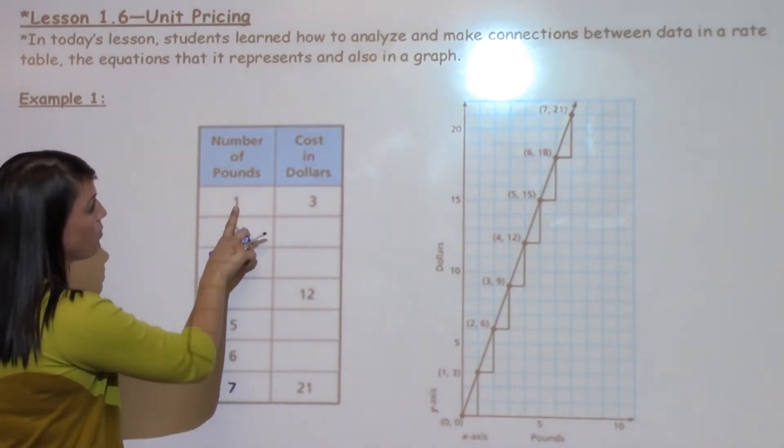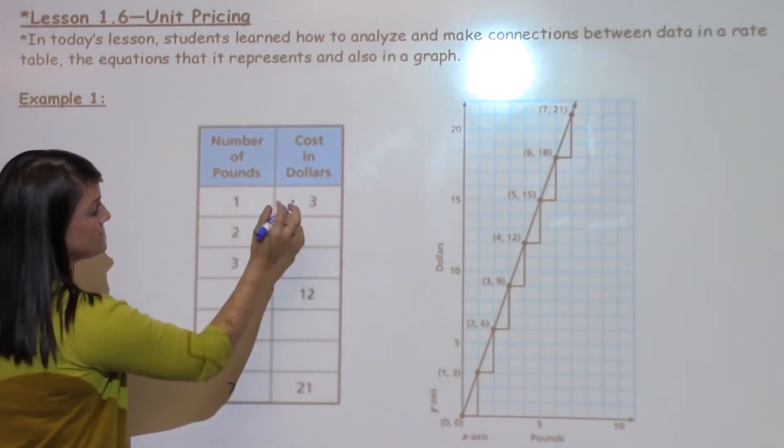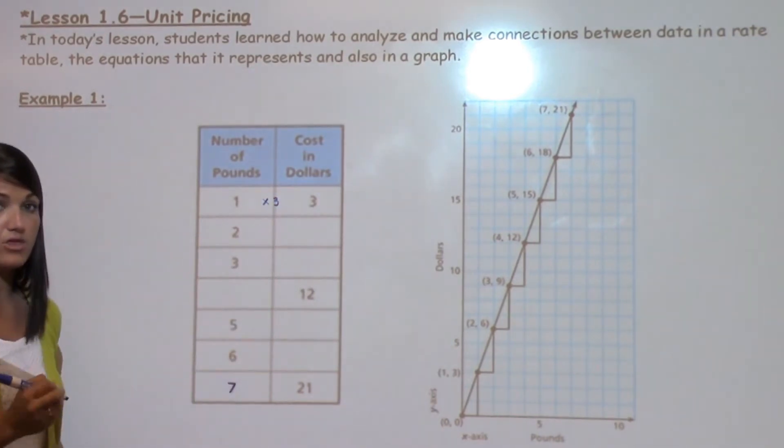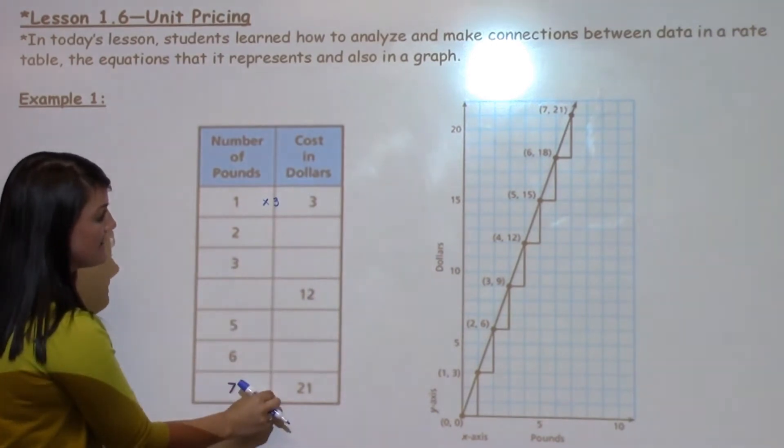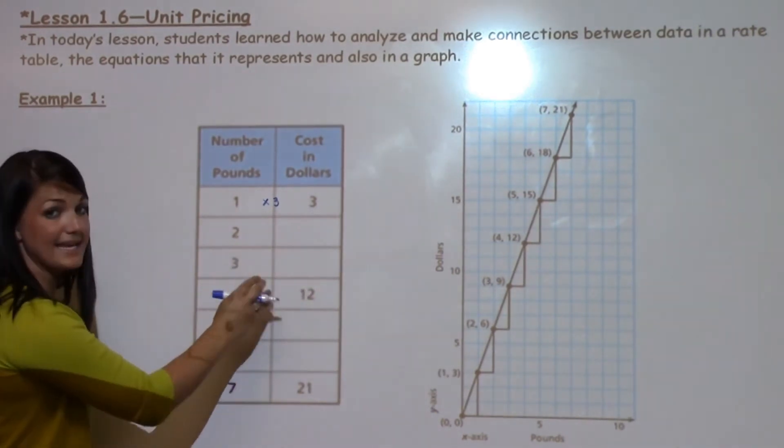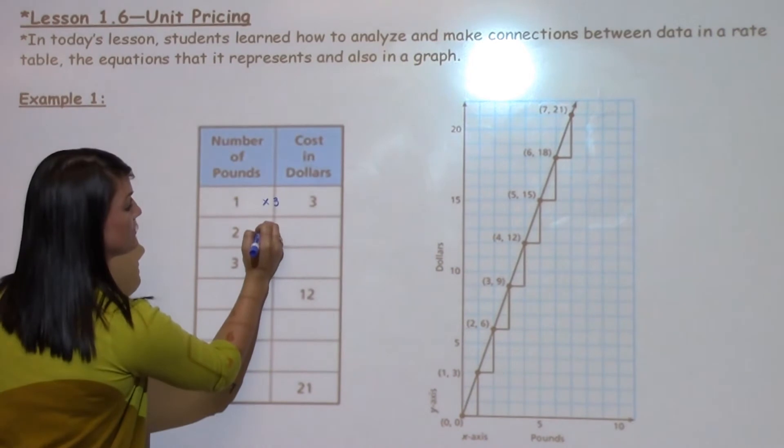I know that if one pound costs $3, to get from one to three, I multiply by three. So I can go ahead and continue to fill out the rate table by taking everything times three, which is my constant rate.